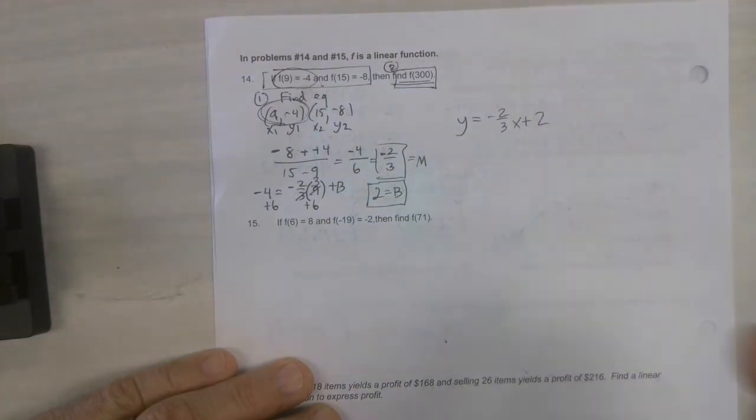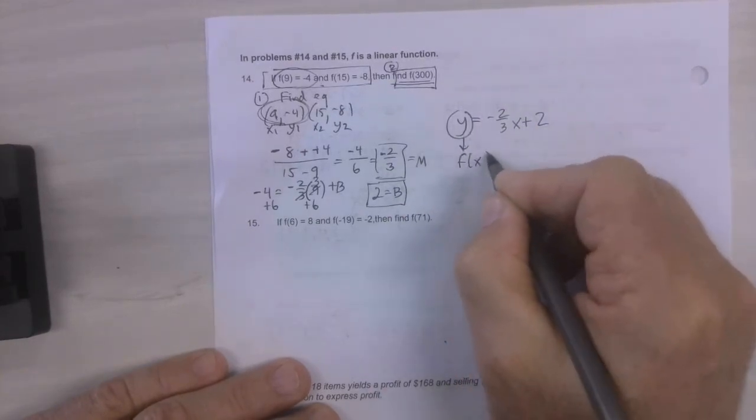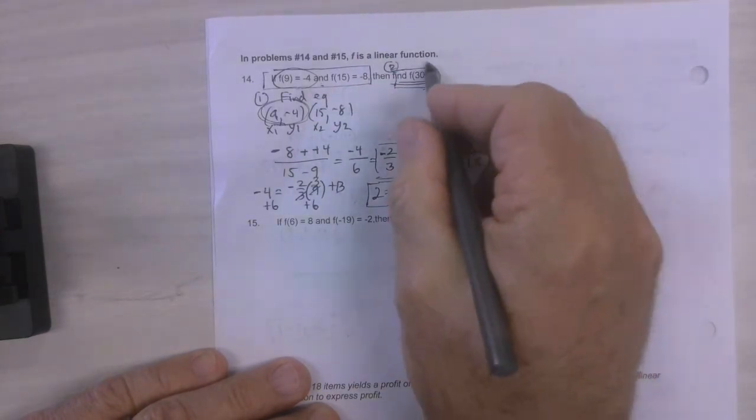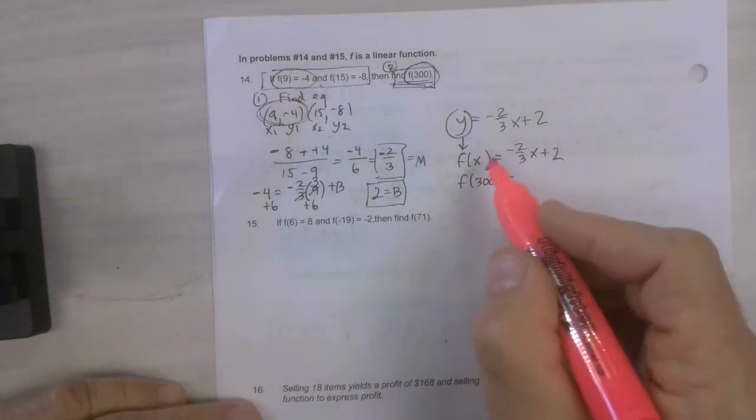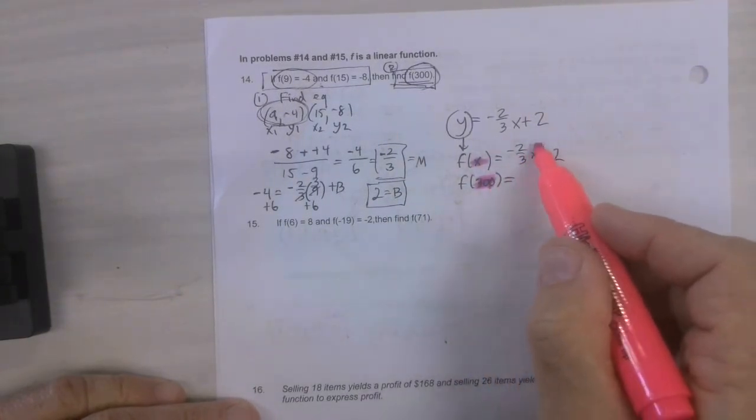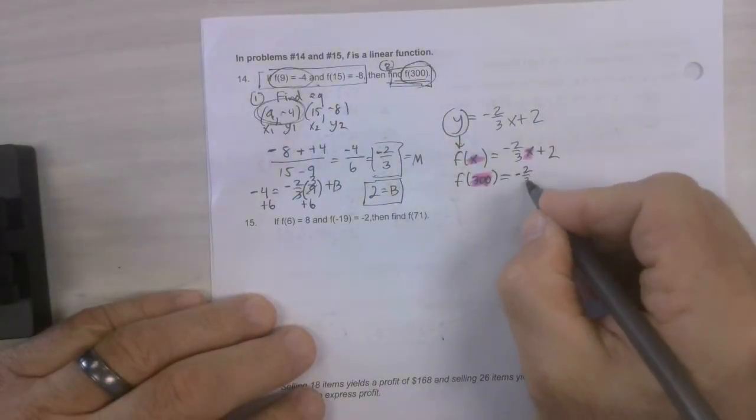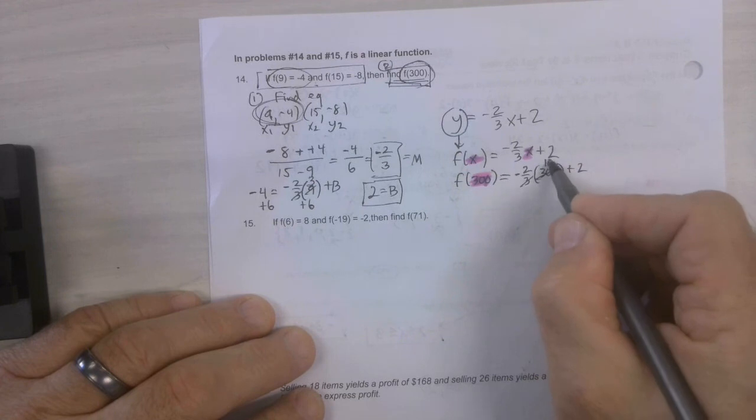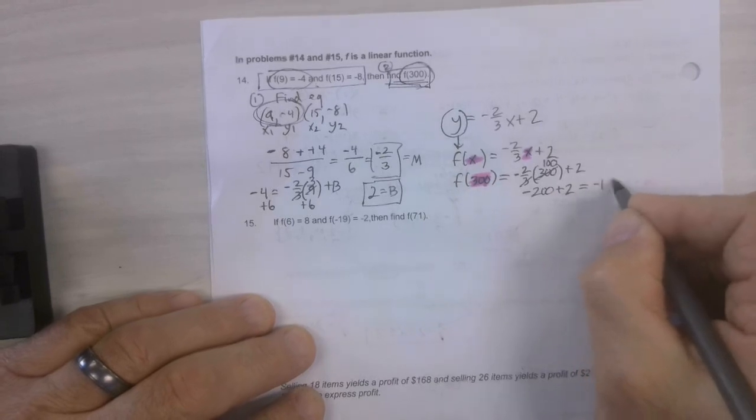Now, if you're in my class, you've heard me say about a thousand times that y can be written as f of x. So, this would be a good time to recall that because now they're saying find f of 300, which is just saying replace that with this. Put 300 into this equation wherever x pops up and that's right there. So, that's going to be negative 2 thirds times 300 plus 2. Once again, we cross reduce which is 100. 100 times negative 2 is negative 200 plus 2 would be negative 198.